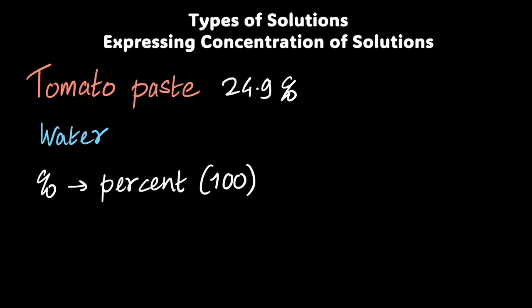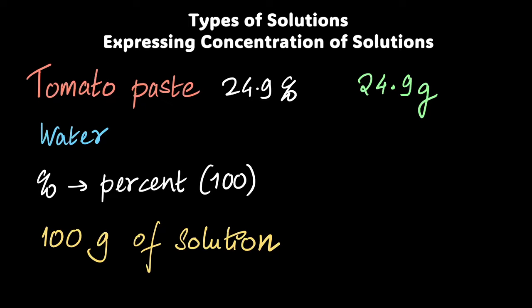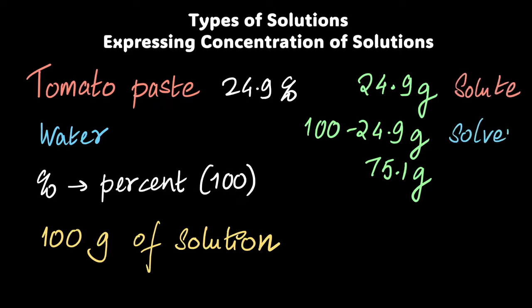So if I take 100 grams of solution—these are all homogeneous solutions—then I have 24.9 grams of the tomato paste and 100 minus 24.9 grams of the rest of it, in this case water. I'm going to call the stuff in a smaller quantity a solute and the larger quantity is solvent. That's the only definition you need so far.